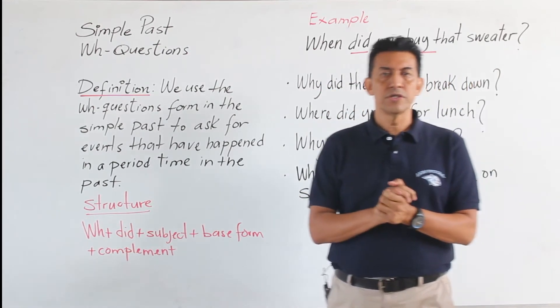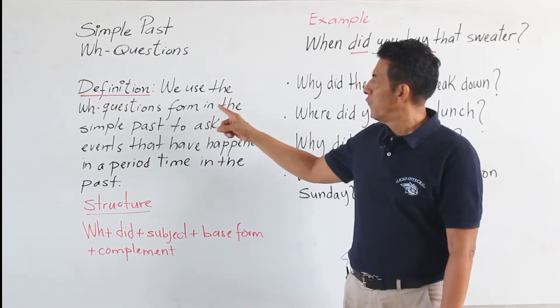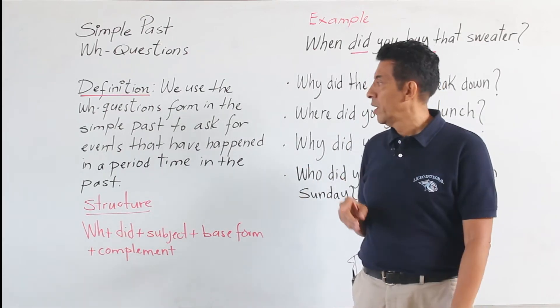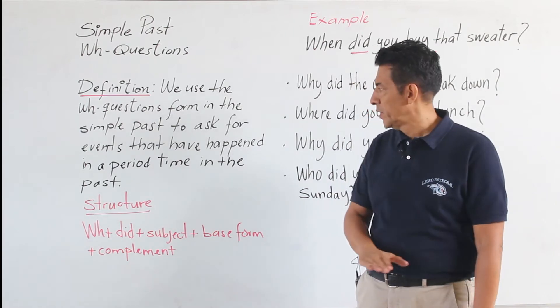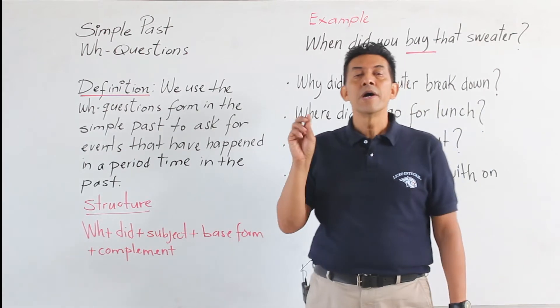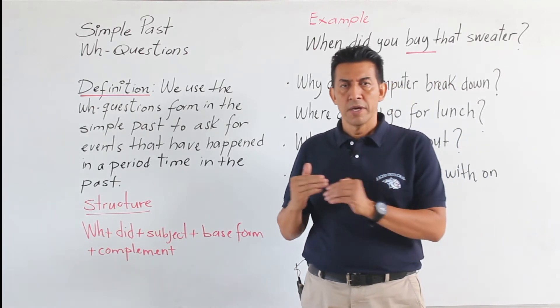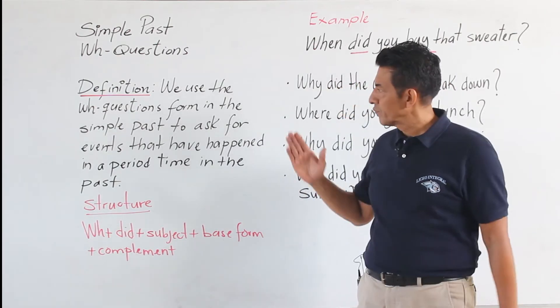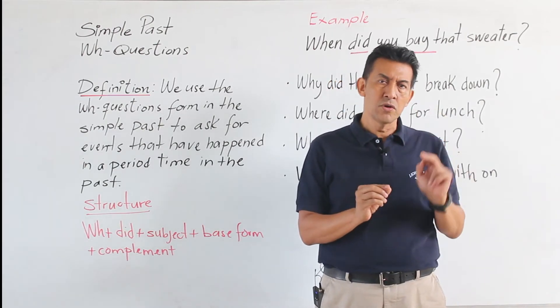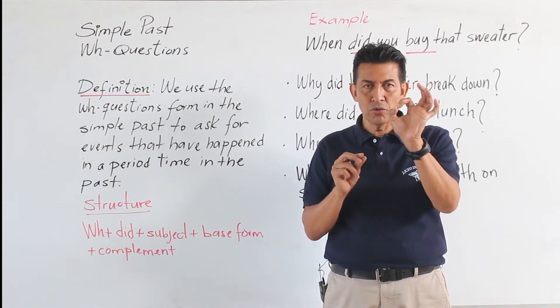The definition says, we use the wh-question in the simple past to ask for events that have happened in a period of time in the past. Vamos a utilizar estas preguntas que vamos a construir para preguntar por eventos que han sucedido en un periodo del pasado, en un preciso momento en que sucedió.